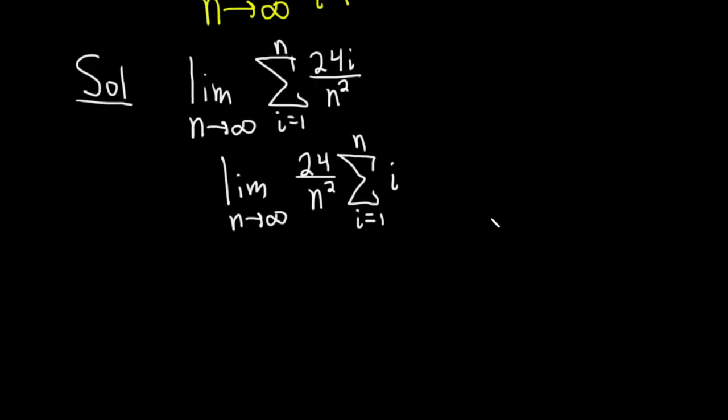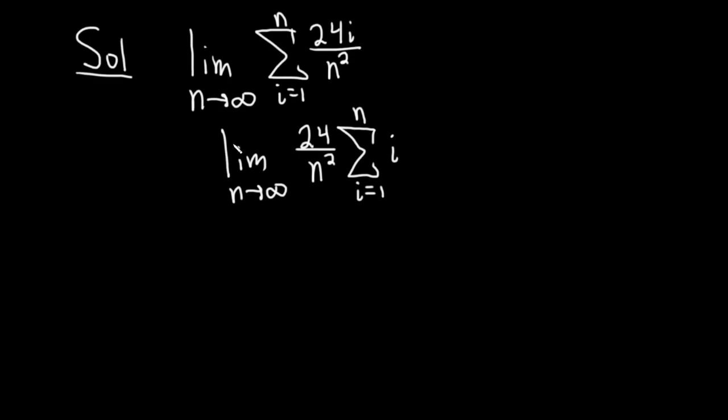And the reason we did that is because now it's a little more clear when we apply a formula. So this finite sum is a special formula. If you look at the sum as i runs from 1 to n of i, this is equal to n times n plus 1 all divided by 2. This is a super powerful formula, very useful.